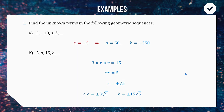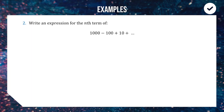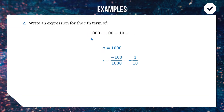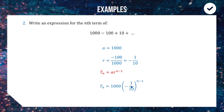Next, we want to use our nth term formula to write an expression for the nth term of this geometric sequence. Our starting term a is 1000. To find r, we work backwards: negative 100 divided by 1000 simplifies to negative one-tenth. So 1000 multiplied by negative one-tenth gives negative 100 — that's our constant multiplier. Substituting into the nth term formula and leaving n as n, the nth term is 1000 multiplied by negative one-tenth to the power of n minus 1.